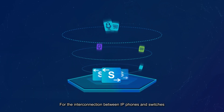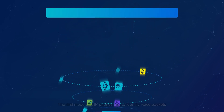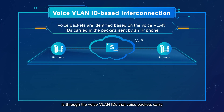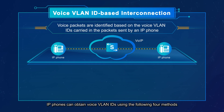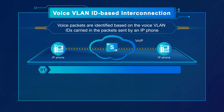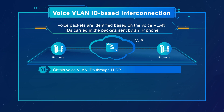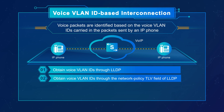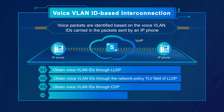For the interconnection between IP phones and switches, there are two modes that IP phones use to identify voice packets. The first mode is through the voice VLAN IDs that voice packets carry. IP phones can obtain voice VLAN IDs using the following four methods: Method 1 — obtain voice VLAN IDs through LLDP; Method 2 — obtain voice VLAN IDs through the network policy TLV field of LLDP; Method 3 — obtain voice VLAN IDs through CDP.